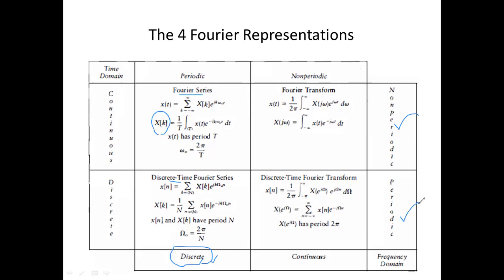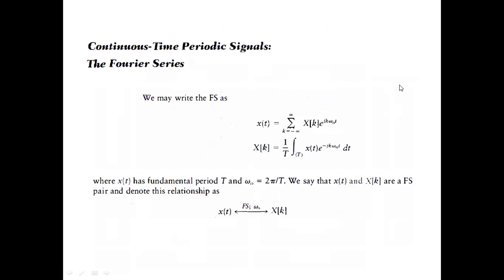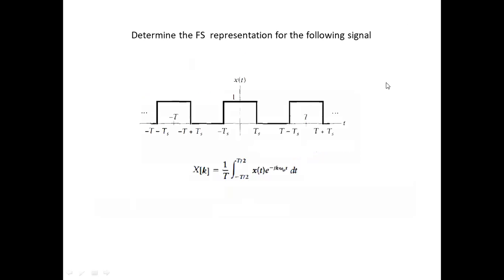Whereas the Discrete Time Fourier Series is discrete but periodic in nature. In the Fourier series formula: because x(t) was periodic we had division by T for a single period; because x(t) was continuous we had integration; and because x(k) is discrete we had a summation. This helps you remember the differences between the various Fourier representations.